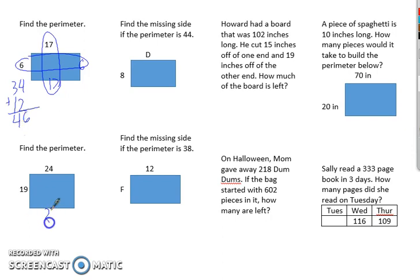Find the perimeter down here. This side is going to be twenty-four. And this side is going to be nineteen. Twenty-four and twenty-four is forty-eight. Nineteen and nineteen is thirty-eight. Add them together. And I'm at eighty-six.